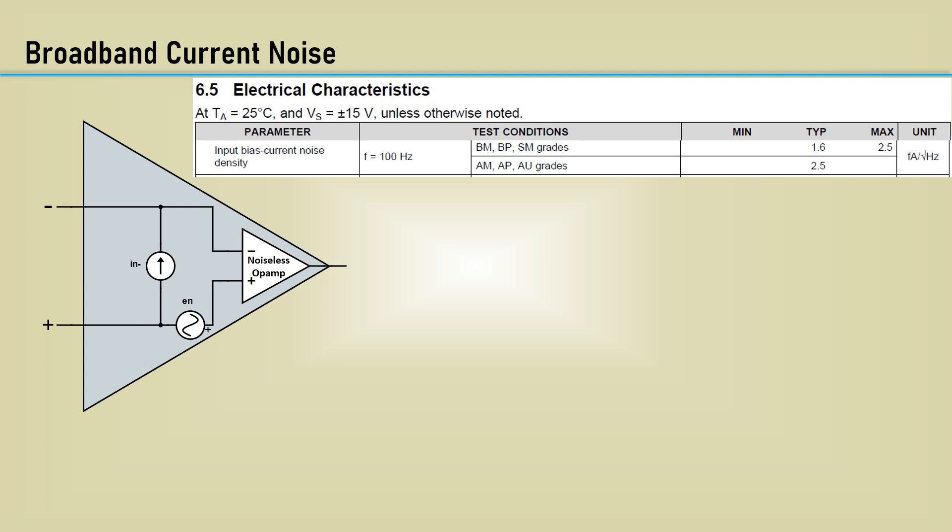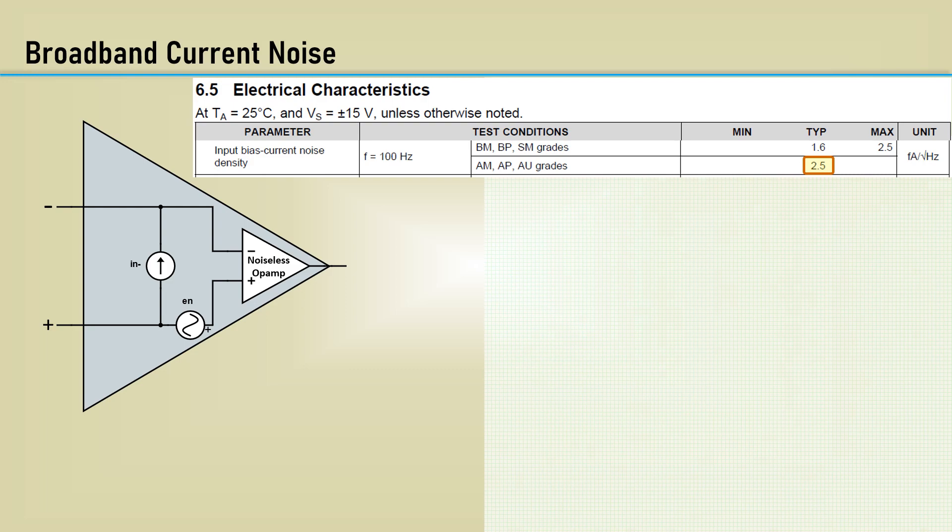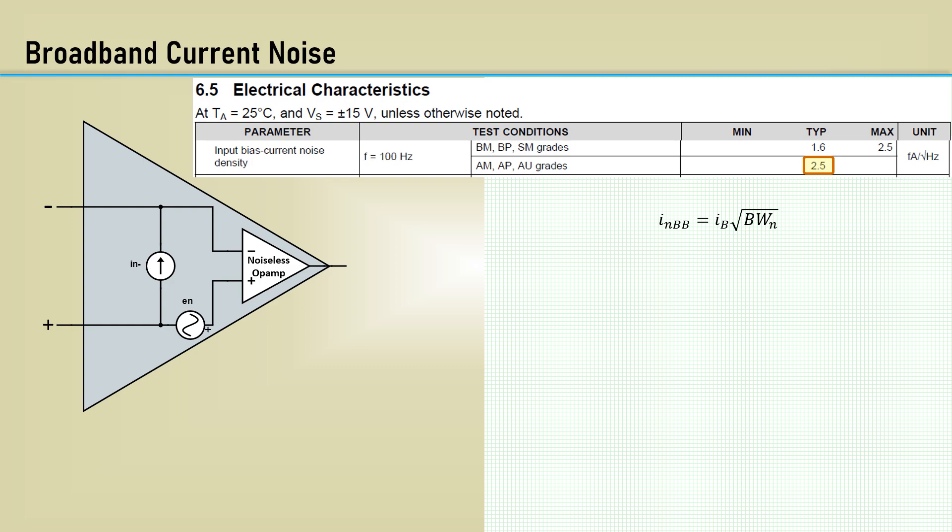It's usually very small, in this case 2.5 femtoamps per square root hertz. The broadband bias current density is the input bias current noise density times the square root of the bandwidth. That comes out to 1.247 picoamperes.